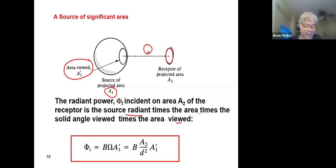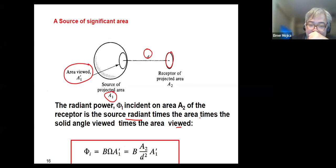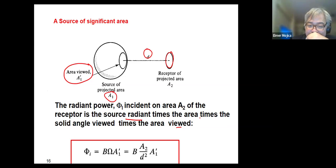This is just an example of a radiometric quantity. In terms of human perception, radiometric measurements do not account for how the human eye perceives light — they provide a raw measure of the total energy.